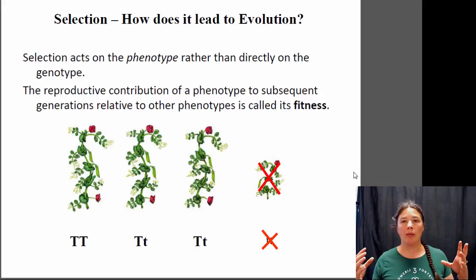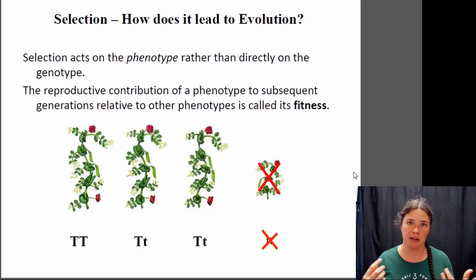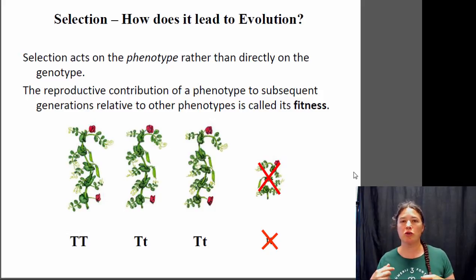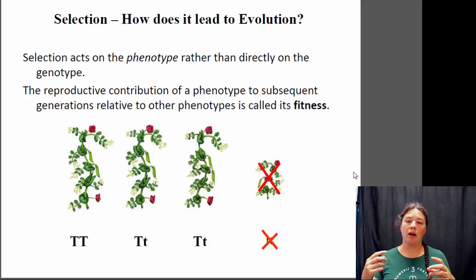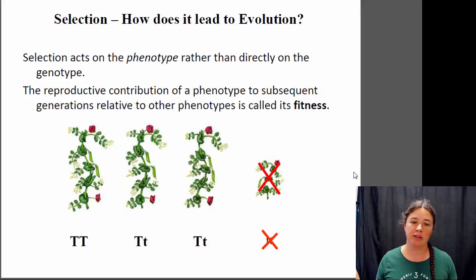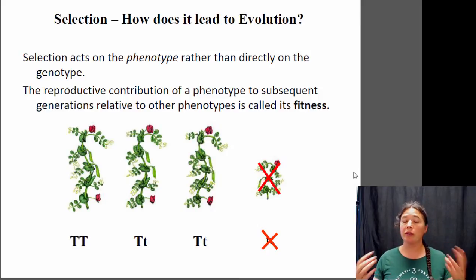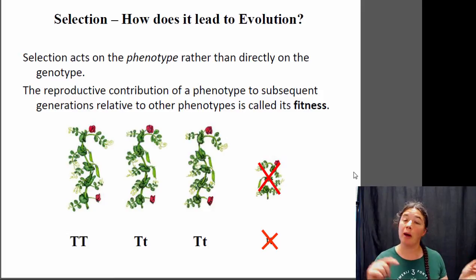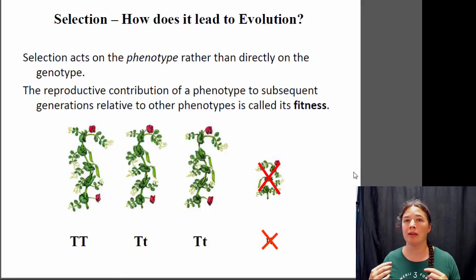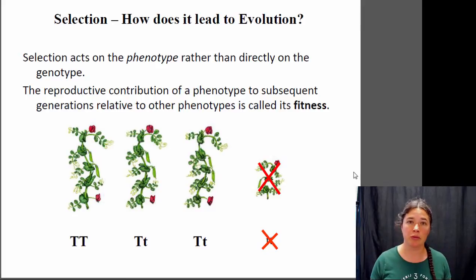The homozygous recessive short individual has lower fitness than the others. By fitness I mean the amount of genetic contribution to the next generation — the number of seeds, in the case of plants, that they leave behind. Because these short plants have low fitness, they don't produce any offspring in this example. So the allele frequency in the population does change because we're removing those alleles from the homozygous recessive individuals. Note there are still short alleles in the population because the heterozygote individuals still contain those short alleles. Before removing the short individuals, the allele frequency was about 50/50; now it's about two-thirds for the tall allele and only one-third for the short allele. That's a change in genetic frequency over time — that would be evolution.